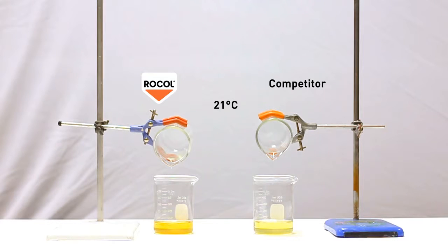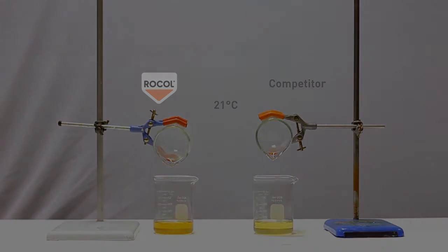ROCOL refrigeration compressor oil is designed for use in low temperature systems such as reciprocating or screw compressors. It is designed to have low levels of wax formation at low temperatures, so has a pour point of minus 45 degrees Celsius.